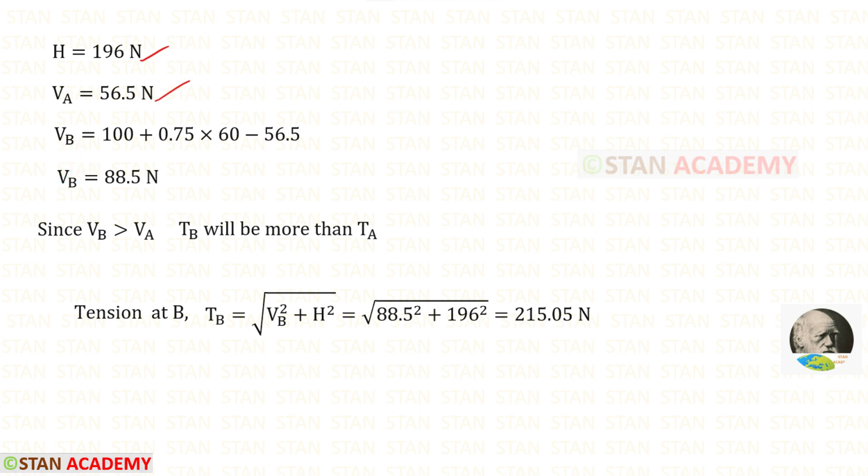Now let us find the vertical reaction VB. For that we have to subtract VA from the total load. When we do that we get 88.5 N.